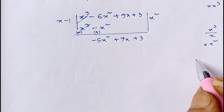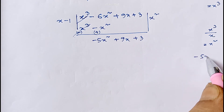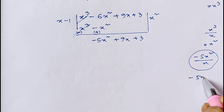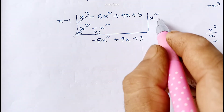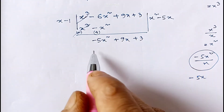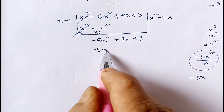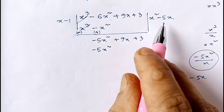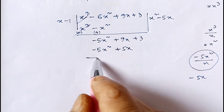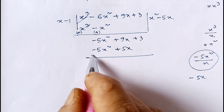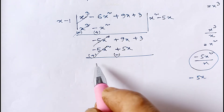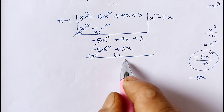Now here we have -5x². Dividing -5x² by x gives -5x. Then x into -5x gives -5x², and -1 into -5x gives +5x. We change the signs and cancel, leaving 9 - 5 = 4x + 3.